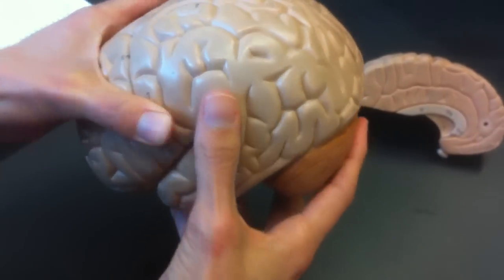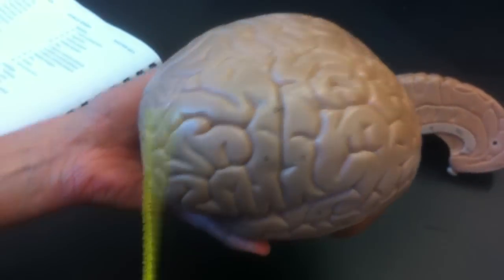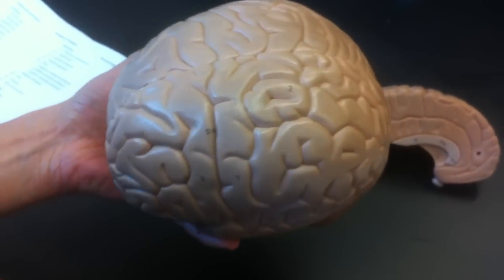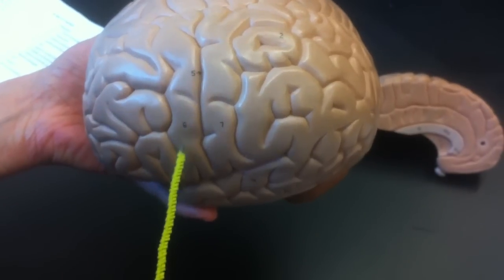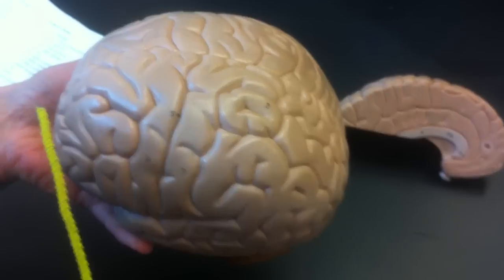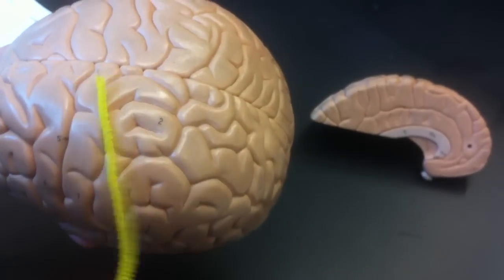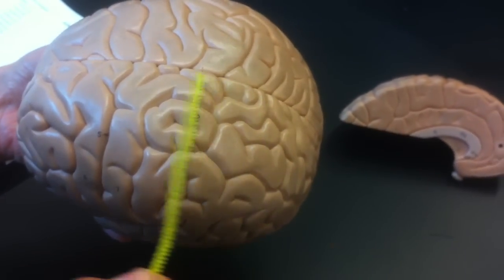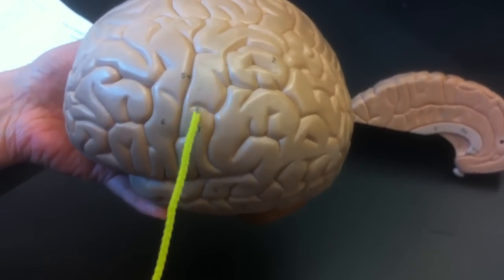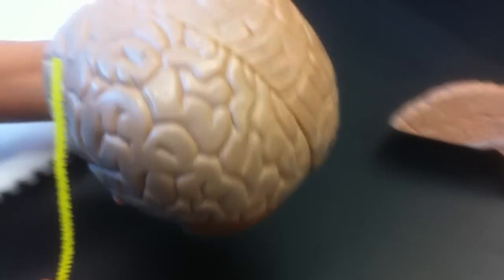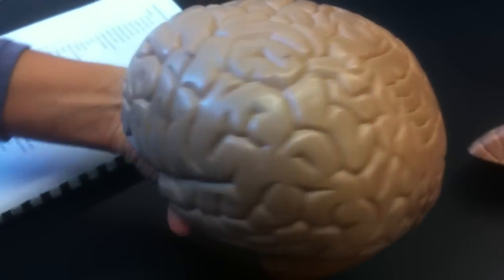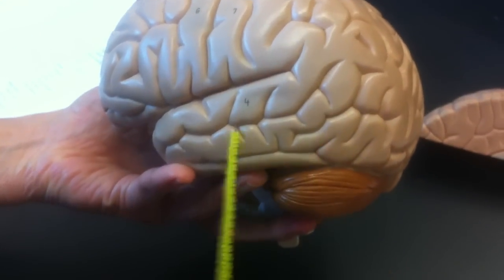Frontal lobe. Precentral gyrus. Succinct. Parietal lobe, parietal lobe is number two. Postcentral gyrus, number seven. Occipital lobe, it's three. Temporal lobe, four.